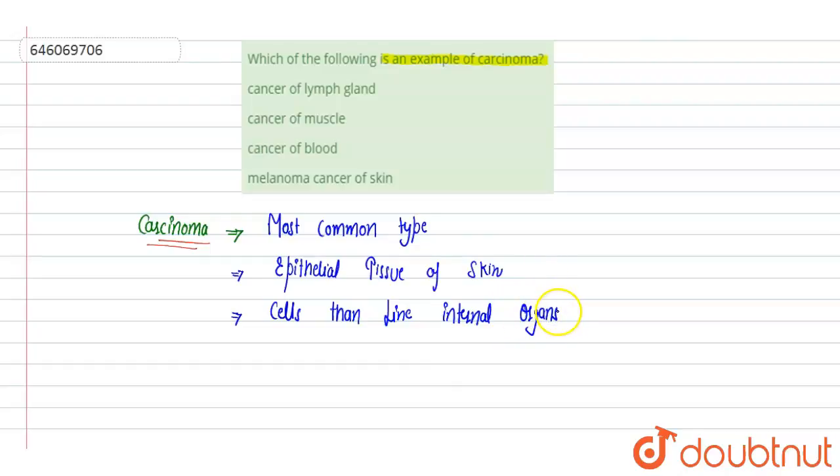So here we will see the options. Option A: cancer of lymph gland. This is one type called lymphoma. It is not carcinoma, it is not starting in the skin or internal organs, so it is called lymphoma. This is incorrect.